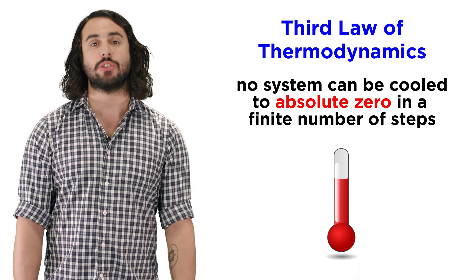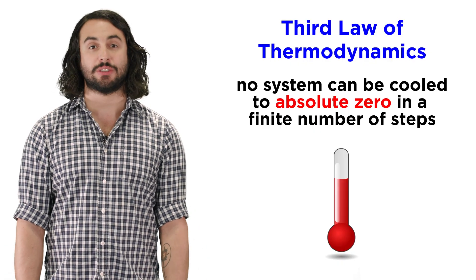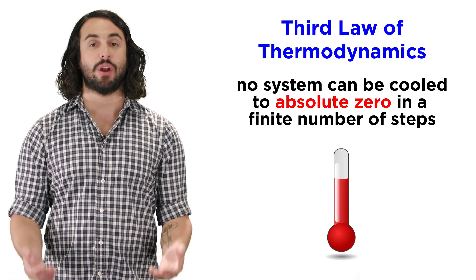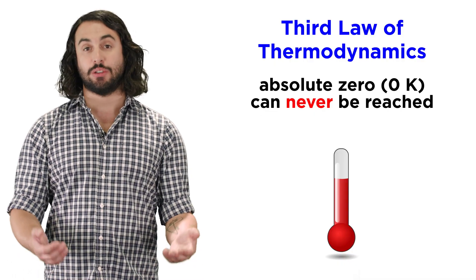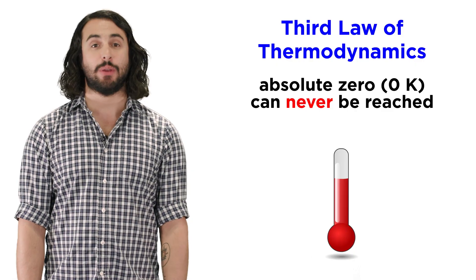In classical physics we understood that any system, including the universe, can never be cooled to absolute zero in a finite number of steps, essentially meaning that absolute zero, a complete absence of kinetic energy, can't be reached.